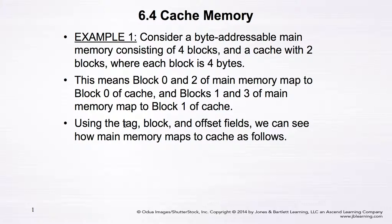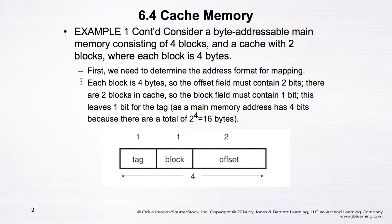Using the tag, block, and offset fields, we can see how main memory maps to the cache. Since each block has four bytes, the offset field must contain two bits, because two to the power of two equals four — that's the number of bits needed to represent the bytes within a block.